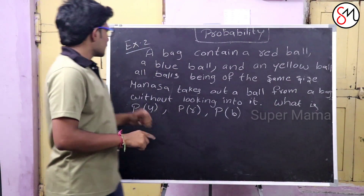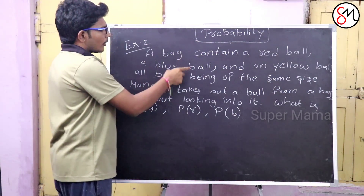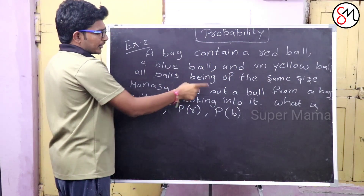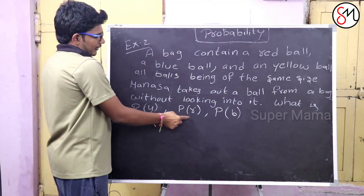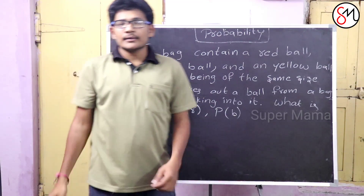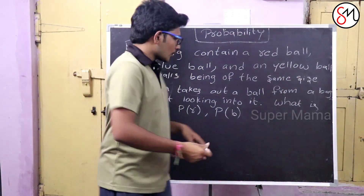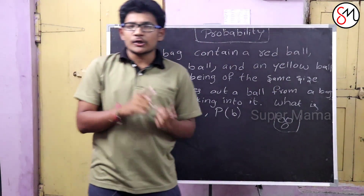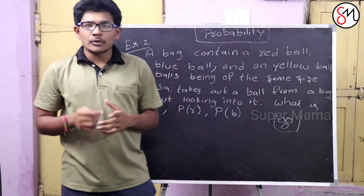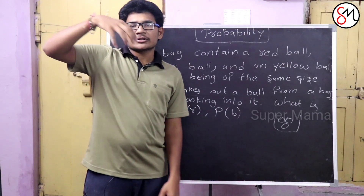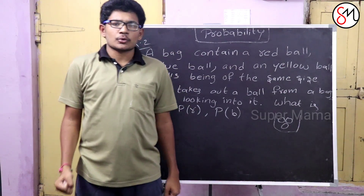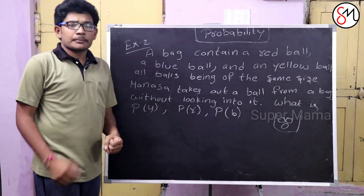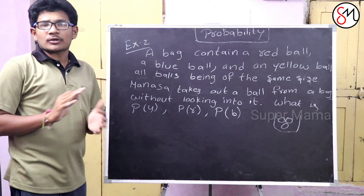This is the second example. A bag containing a red ball, a blue ball, and a yellow ball — all balls being of the same size. Mansa takes out a ball from a bag without looking into it. What is the probability of Y, probability of R, and probability of B? One bag has three balls. One ball is yellow, one ball is red, one ball is blue. Probability of Y means probability of yellow ball.